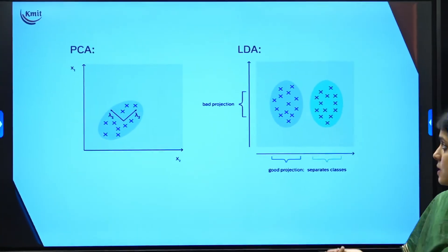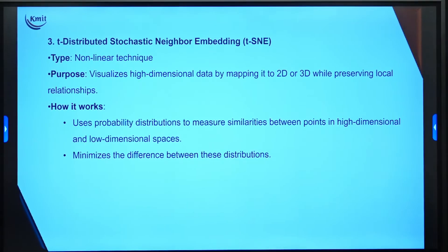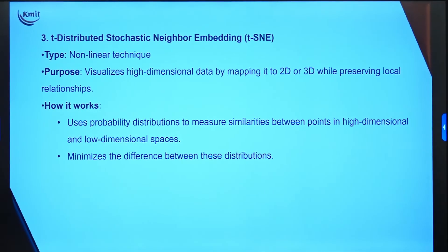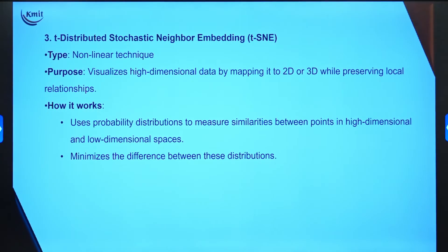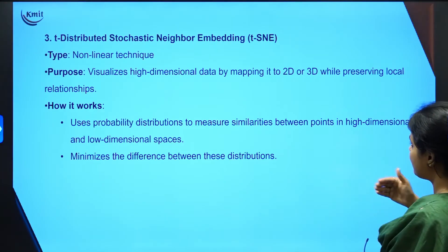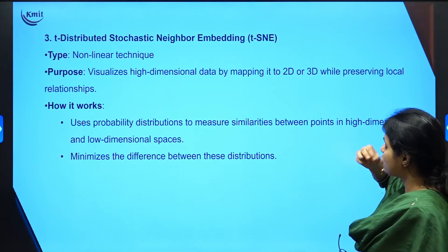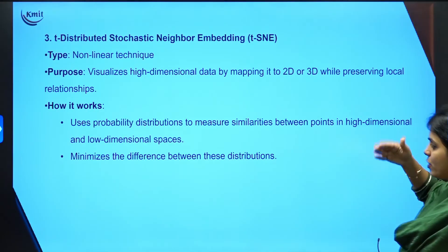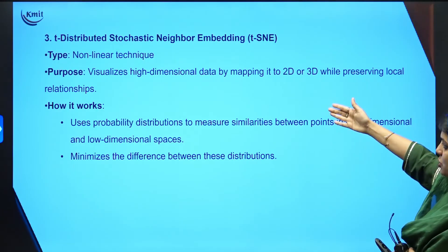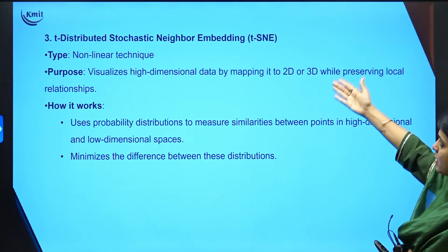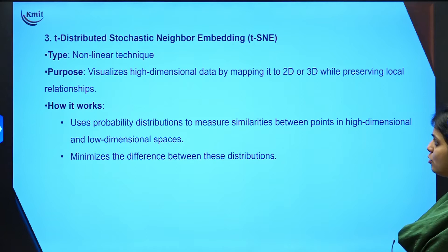The third technique is T-distributed Stochastic Neighbour Embedding (TSNE), which is a non-linear technique — unlike LDA and PCA which are linear. TSNE is used for non-linear data and visualizes high-dimensional data by mapping it to 2D or 3D while preserving local relationships. It models the probability distribution of similarity between points in very high-dimensional data to very low-dimensional data.